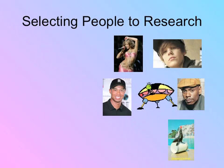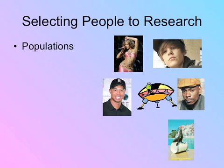If we want to talk about research, the first thing we should probably talk about is how you select people to participate. A population is simply the group being studied from which a sample could be drawn. If we wanted research on Americans, anybody living in the United States would be fair game — that would be our population. In many cases it's way too hard to research every single person within a population, so you're going to take a sample, a portion of the population being studied.